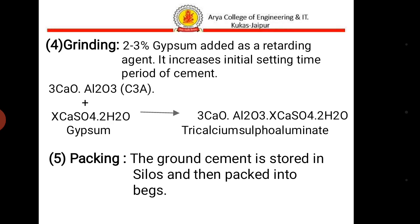The fourth step is grinding. After cooling the clinker, 2–3% gypsum is added as a retarding agent, which increases the initial setting time period of cement. The fifth step is packing — the ground cement is stored in silos and then packed into bags.